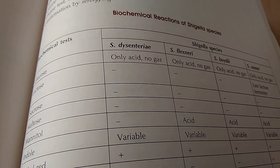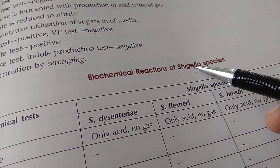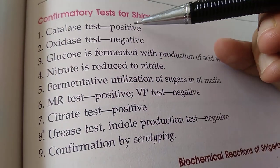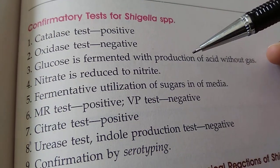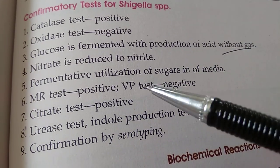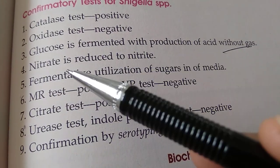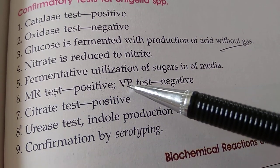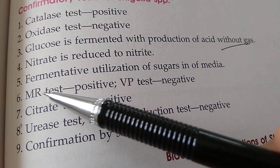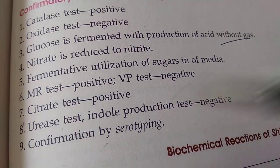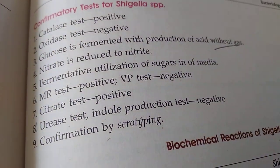Biochemical response of Shigella species — I only remember that Shigella is a very good girl; she will not leave gas. Look at the tests for Shigella: it is catalase positive, oxidase negative, glucose is fermented with production of acid without gas. Nitrate is reduced to nitrite. Fermentative utilization of sugars. MR positive, VP negative. Citrate positive. Urease test negative. Indole test negative. Confirmation by serotyping.